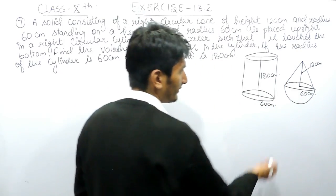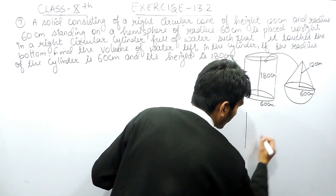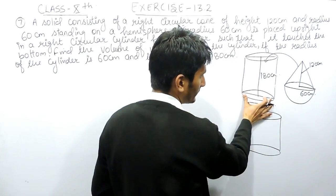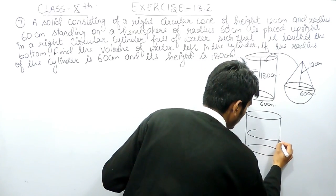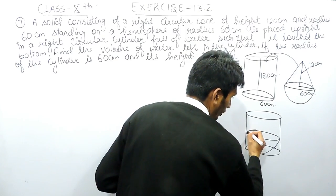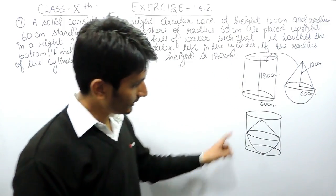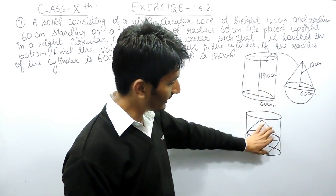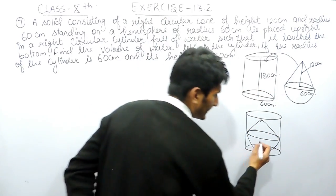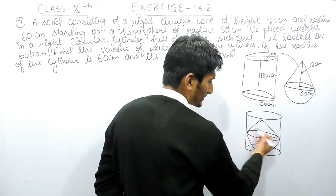We are placing this combined figure inside the cylinder. Since the base radius of both is the same, the hemisphere sits at the bottom and on top of it a cone is placed. So the figure looks like a cylinder full of water with the combined solid — hemisphere base plus cone on top — placed inside it. The dimensions of all three shapes are given.